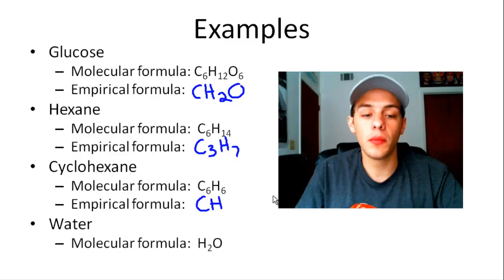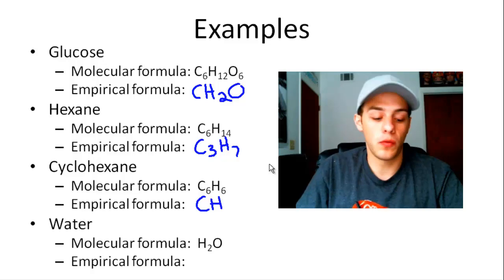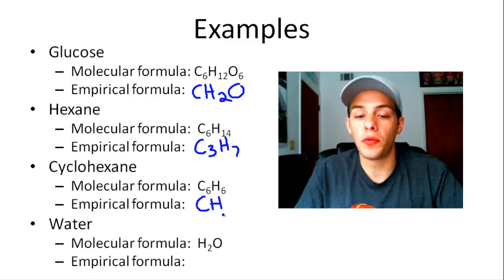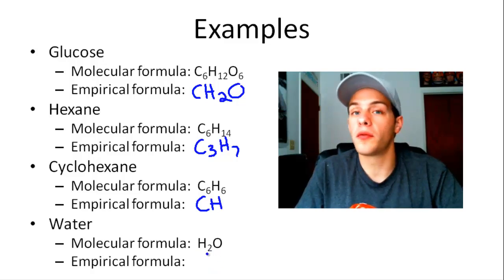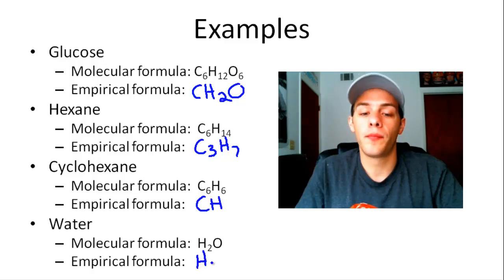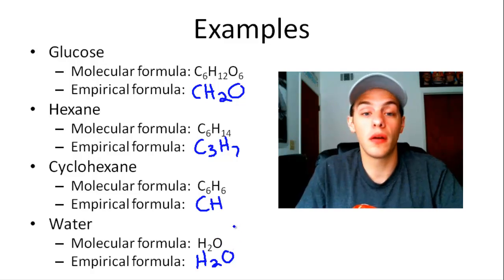Let's do water. The molecular formula for water is H2O. It turns out these numbers are already in their reduced form — the only number that divides evenly into both 2 and 1 is 1, and dividing by 1 changes nothing. So the empirical formula for water is also H2O. Sometimes the empirical formula and molecular formula of a compound are identical to one another — this happens all the time.